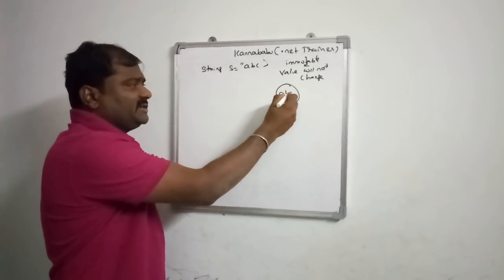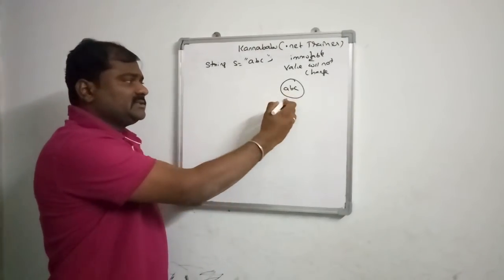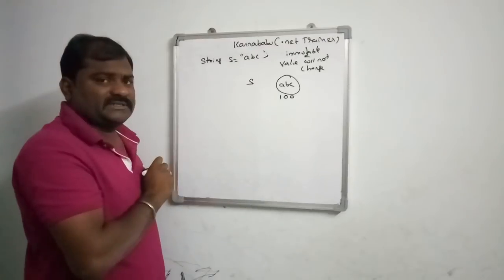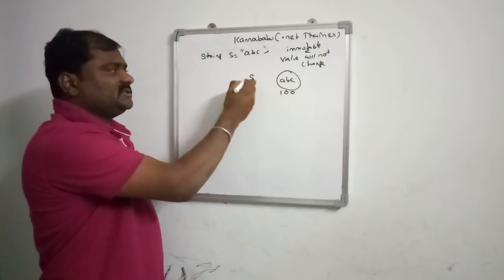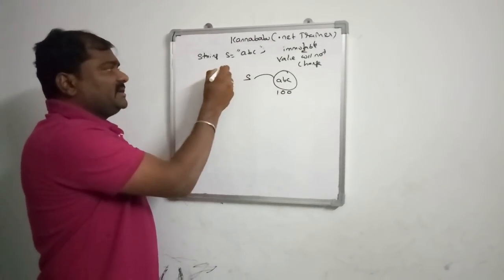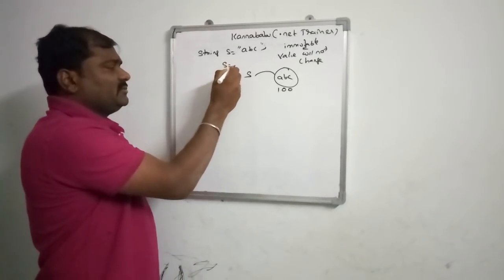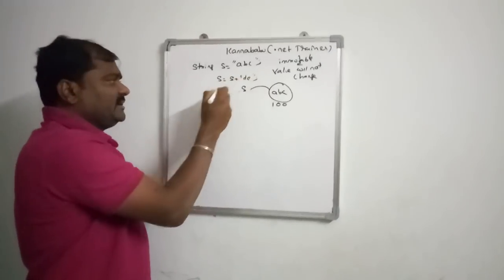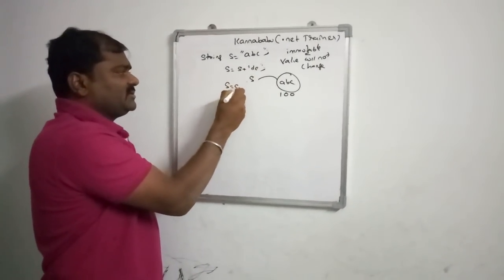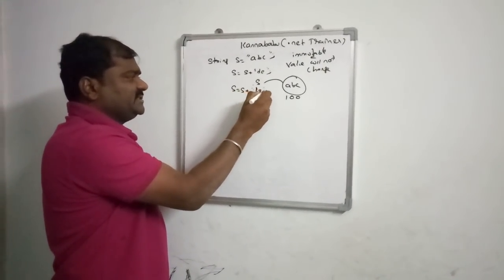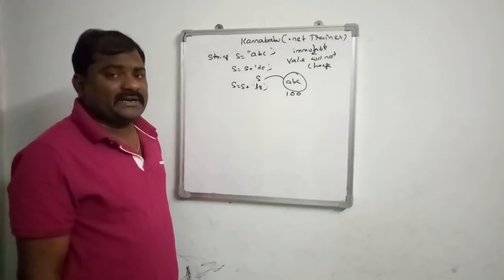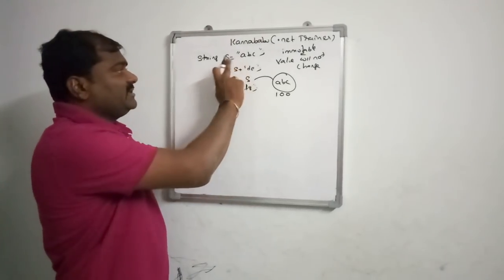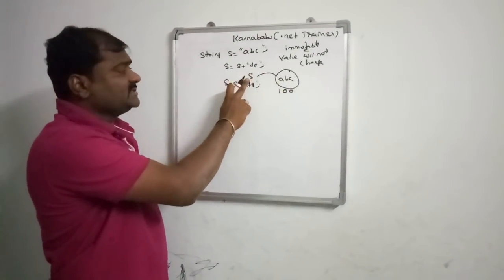The object is created, the value stored is ABC, and this object will have some address. The name given for the object reference is S, so the address of the object is stored in S. Now if I write S = S + DE, and then S = S + FJ, let us see what will happen with concatenation on a string.